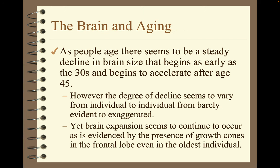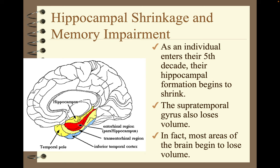As people age, there seems to be a steady decline in brain size that begins as early as the 30s and begins to accelerate after age 45. However, the degree of decline varies from individual to individual, from barely evident to exaggerated. Yet brain expansion seems to continue, as evidenced by the presence of growth cones in the frontal lobe even in the oldest individuals — so no matter how old you are, you can still learn. As an individual enters their fifth decade, their hippocampal formation begins to shrink, the supratemporal gyrus loses volume, and most areas of the brain begin to lose volume.